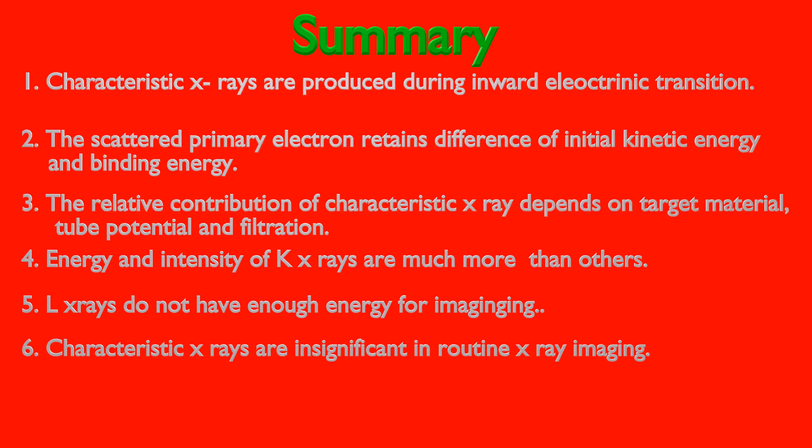For tungsten targets, below 69.53 keV there is no K-shell characteristic X-rays. The fraction of K radiation contributing to the total energy fluence is less than 10% for a 100 keV tube voltage. Percentage of K characteristic X-rays first increases with KV up to 150 keV and then decreases with increase in tube potential.